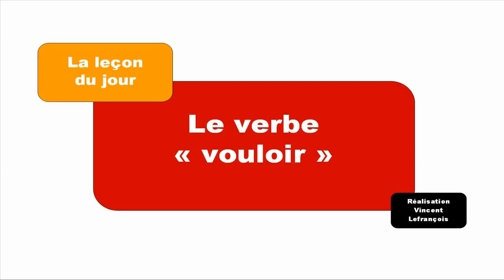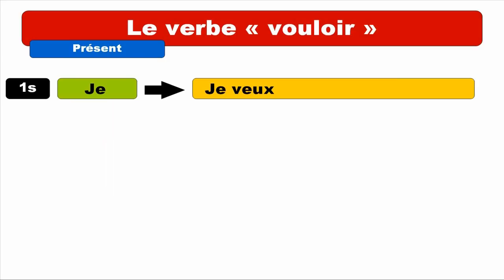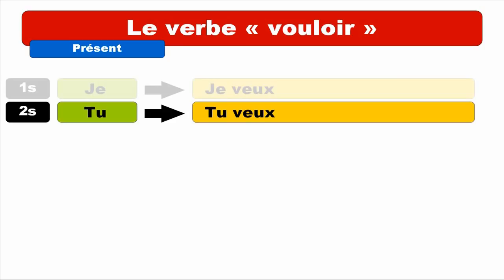It's JE. And the form we get is JE VEUX. Repeat. JE VEUX. You can see that the final X is not pronounced. JE VEUX. Second person — TU VEUX. You can notice it's actually the same form. Same pronunciation — TU VEUX. Repeat. TU VEUX.